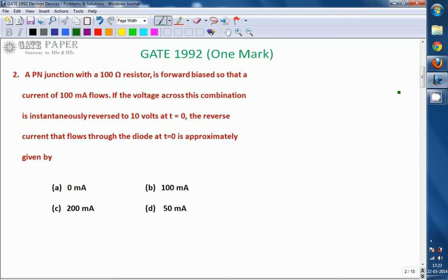A PN junction with a 100 ohm resistor is forward biased so that a current of 100 mA flows. If the voltage across this combination is instantaneously reversed to 10V at T equals 0, the reverse current that flows through the diode at T equals 0 is approximately: